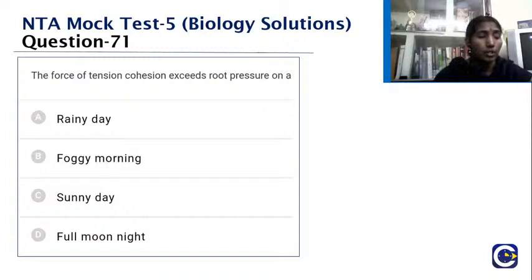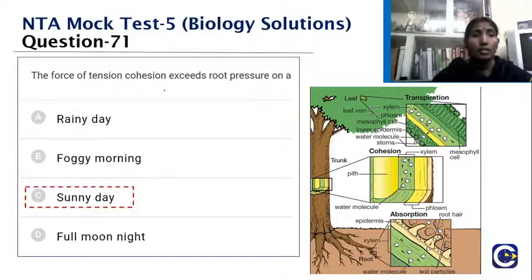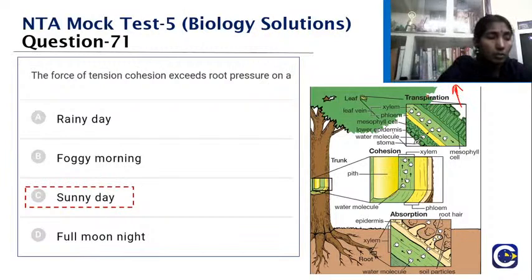The force of tension-cohesion exceeds root pressure on which day — rainy day, foggy morning, sunny day, or full moon night? On a sunny day, the rate of transpiration is very high, generating a large tension-cohesion pull in the xylem that greatly exceeds root pressure. The answer is a sunny day.